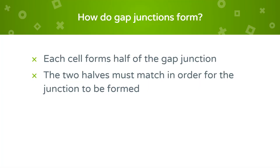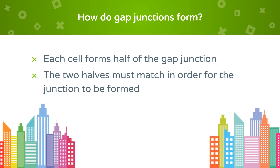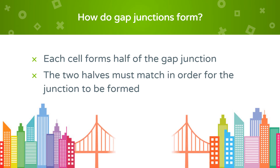Each cell forms half of the gap junction, and the two halves must match in order for the junction to be formed. This is like a bridge between two cities, where the cities are the cells and the bridge is the gap junction. One city would build half of the bridge and the other city would build the other half, and each half must match up in order for the bridge to be completed.